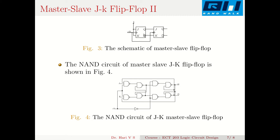During the positive edge of the clock, the master flip-flop changes state and toggles. There is feedback from output to input, but it has little effect because the master is only active during the leading edge. During the trailing edge, the slave flip-flop becomes active and transfers Q and Q-bar from the master to the slave outputs, which are then fed back to the master input.